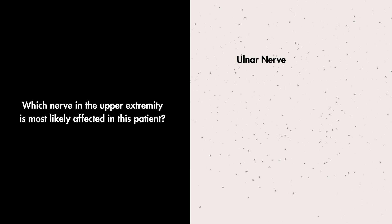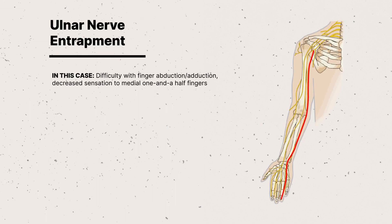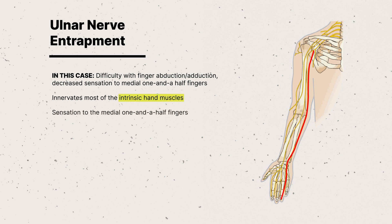The correct answer is C, the ulnar nerve. The patient's symptoms, including difficulty with finger abduction and adduction as well as decreased sensation over the medial 1.5 fingers, suggest ulnar nerve involvement. This nerve primarily innervates most of the intrinsic hand muscles responsible for these movements, and also provides sensory innervation to the medial 1.5 fingers on both palmar and dorsal surfaces. A positive Tinel's sign, which is a tingling sensation or paresthesia elicited by tapping over the nerve, is indicative of nerve entrapment or injury.